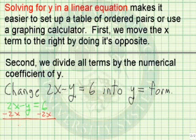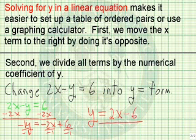2x minus 2x is 0, so we're left with negative y, or negative 1y. We get negative y equals negative 2x plus 6. Now the next thing we're going to do is get rid of the negative 1. Let's divide everything by negative 1. So our new equation is y equals 2x minus 6. This is the equation that's very convenient to use in your graphing calculator or for setting up a table.